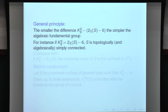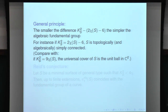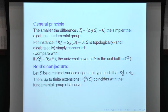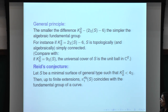For instance, when K² = 2χ - 6, S is topologically and algebraically simply connected. By Yau's uniformization principle, if K² = 9χ, the universal cover of S is the unit ball in C². There is a conjecture of Miles Reid, many years old, that says: if you have a minimal surface of general type with K² < 4χ, then the fundamental group of the surface is a finite extension of the fundamental group of a curve.